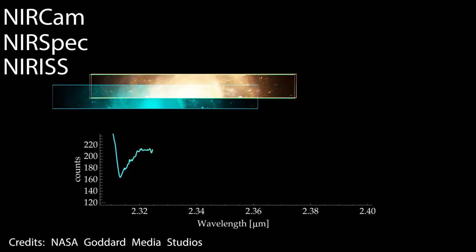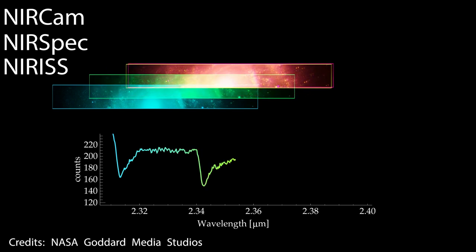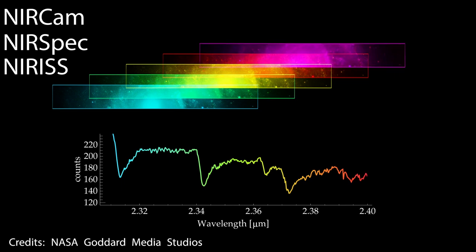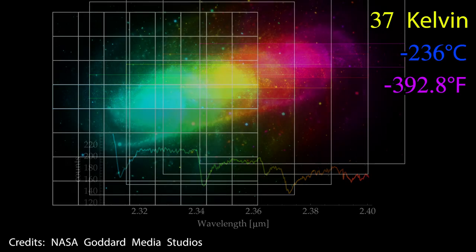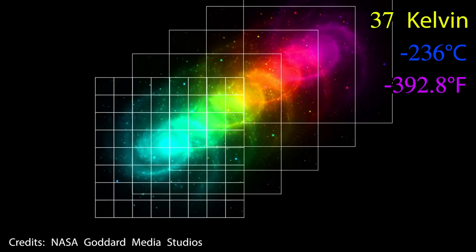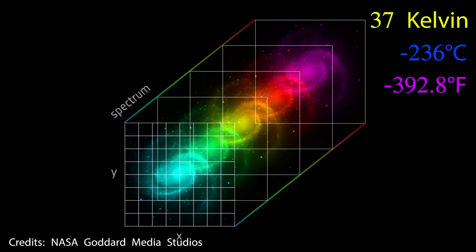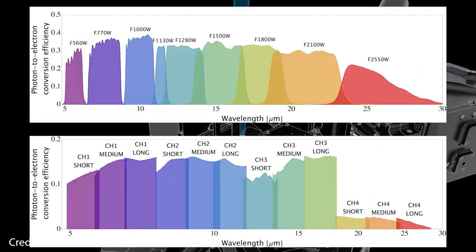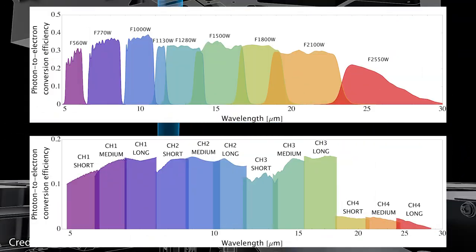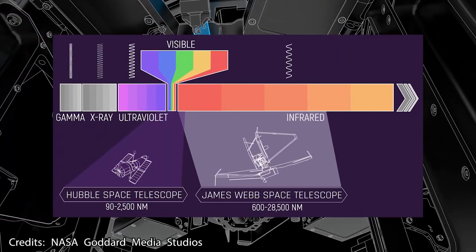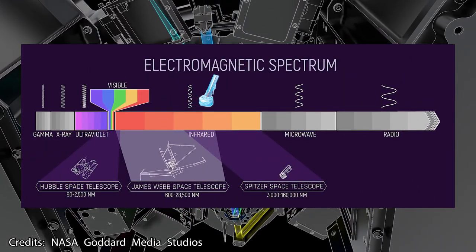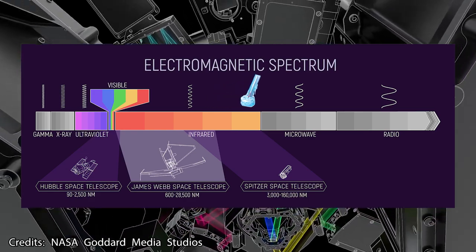The detectors of the other three scientific instruments are able to see both the reddest of visible light as well as near-infrared light, and so they work perfectly at 37 Kelvin. They don't need to be colder to detect those types of wavelengths of light. However, the detectors on the mid-infrared instrument, or MIRI, are able to capture mid-infrared light, which are longer wavelengths at lower energy, and typically the longer the wavelength of infrared light, the colder the detector needs to be to detect them.